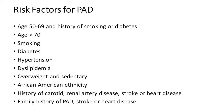Now let's talk about risk factors for peripheral artery disease. If you are age fifty to sixty-nine with a history of smoking and diabetes, your risk is very greatly increased. Age more than seventy also amplifies your risk. Smoking is the biggest risk factor for peripheral artery disease. Diabetes is another major risk factor, along with hypertension, dyslipidemia (elevated cholesterol), being overweight and sedentary, African-American ethnicity, and a history of carotid and renal artery disease, stroke, or heart disease.